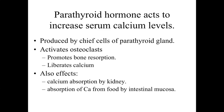Parathyroid hormone acts to increase serum calcium levels. This is a hormone produced by chief cells within the parathyroid gland, and they essentially respond to decreases in calcium within the bloodstream. Parathyroid hormone is going to affect a variety of structures within the body. It's going to very quickly increase the absorption of calcium from foods within the intestinal mucosa, and it's going to increase calcium reabsorption from the kidneys — so if calcium is being filtered out, we're selectively pulling it back into the body during urine formation. Both of these can occur relatively rapidly.